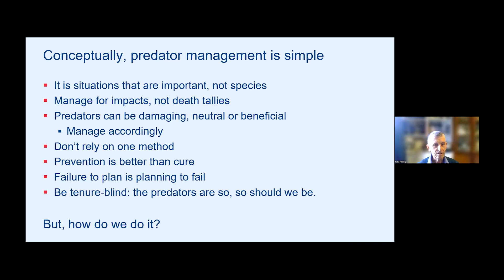The next thing to think about is to manage for the impacts, whether negative, positive, or neutral — don't just count the tally of dead animals, because that won't tell you much about the effect of those controls on impacts. Remember that predators can be damaging, neutral, or beneficial, and manage them accordingly. If they're damaging, reduce their numbers and exclude them. If they're neutral, do nothing. If they're beneficial, encourage their numbers.